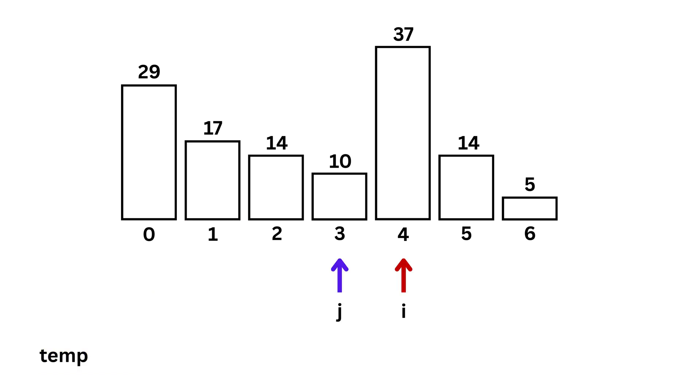j is another position pointer, which starts from one less than i. So j starts from i minus 1, and it moves backwards to the beginning of the list, and it helps us compare the variable temp with the numbers on the left.